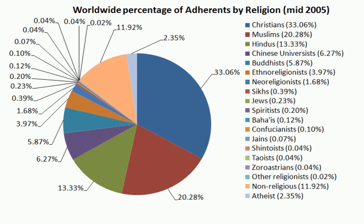The Sangam landscape was classified into five categories called thinai, based on the mood, the season and the land. Tolkapiyam mentions that each of these thinai had an associated deity, such as Sayan in Kurangi the hills, Tirumal in Malai the forests, Kotravai in Marutham the plains, and Wanji Ko in the Neethal the coasts and the seas. Other gods mentioned were Mayan and Vali, who were all assimilated into Hinduism over time.